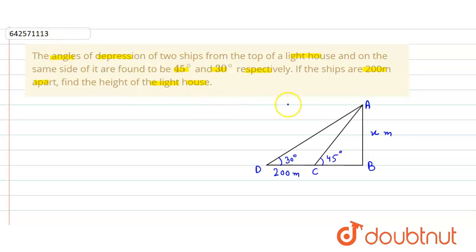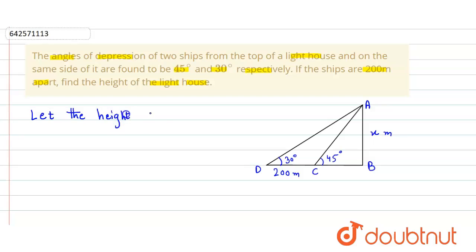First, let the height of the lighthouse be equal to x meters. Here AB represents the lighthouse, so the height of the lighthouse is x meters.